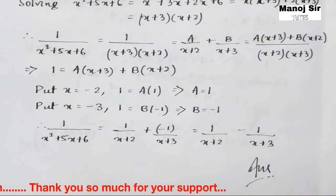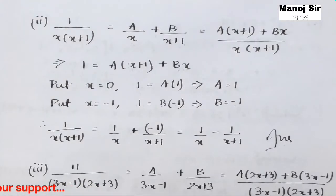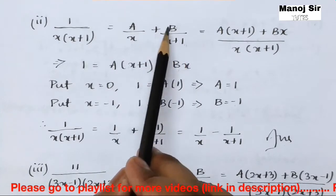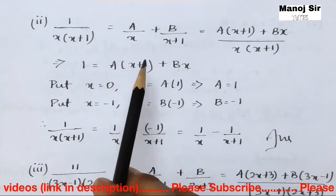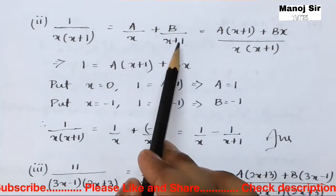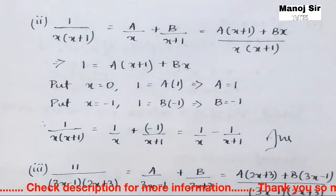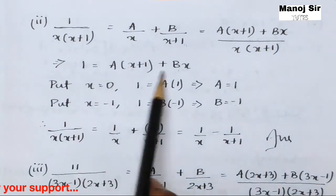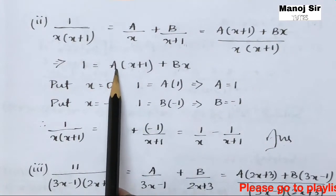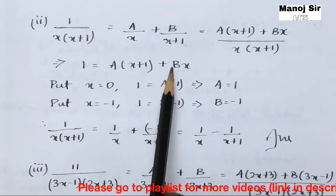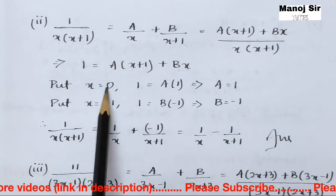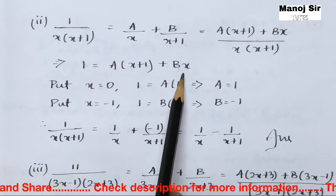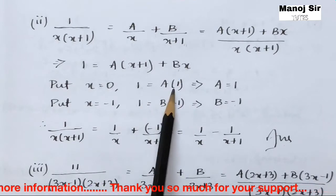Second example: 1 upon x(x+1). We can write this as A upon x plus B upon (x+1). Taking LCM x(x+1), the numerator becomes A(x+1) + Bx. Comparing with the original numerator: 1 = A(x+1) + Bx. To find A, put x = 0 so that the Bx term vanishes. Then 1 = A(0+1) = A, giving A = 1.